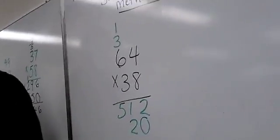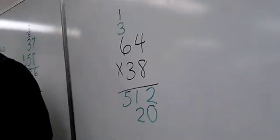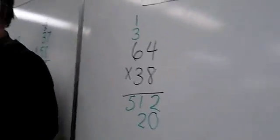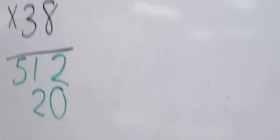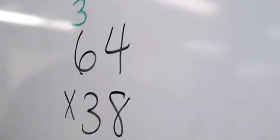What's our next step in this process? Do you know? 3 times 6 is what? 18. 18 plus the 1 we regrouped. 19. So, we write 19.